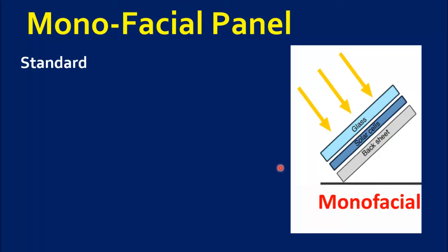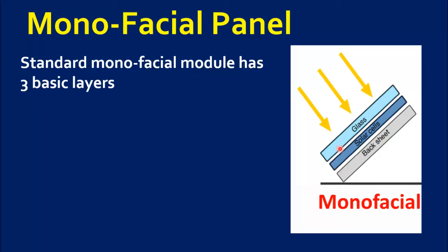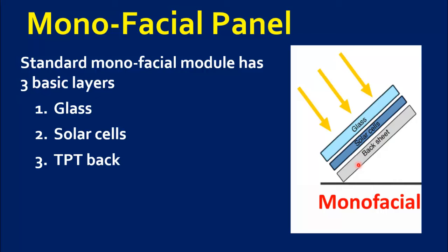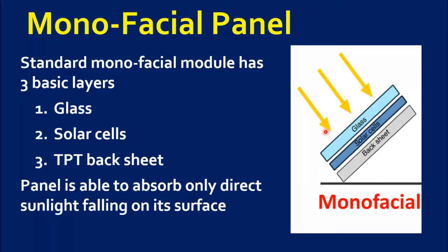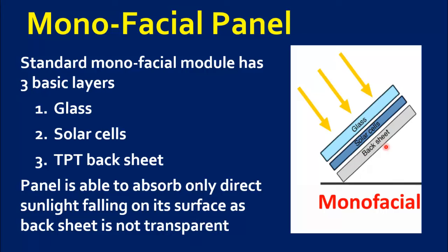A standard monofacial module has three basic layers: glass, solar cells, and TPT back sheet. A monofacial panel is able to absorb only direct sunlight falling on its front surface, which converts into electricity, as the back sheet is not transparent.